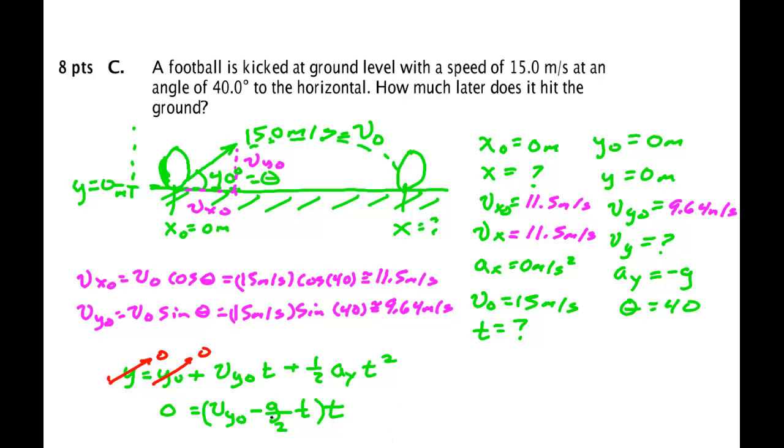Now either this term has to be 0, that has to be 0, or both. Well it turns out in this case mathematically, this one will be 0 at the final time. This term is 0 at the initial, and they're not both 0 at the same time.